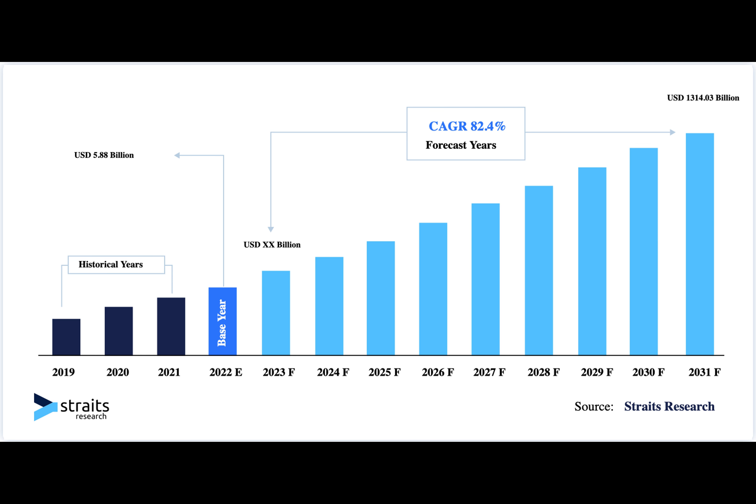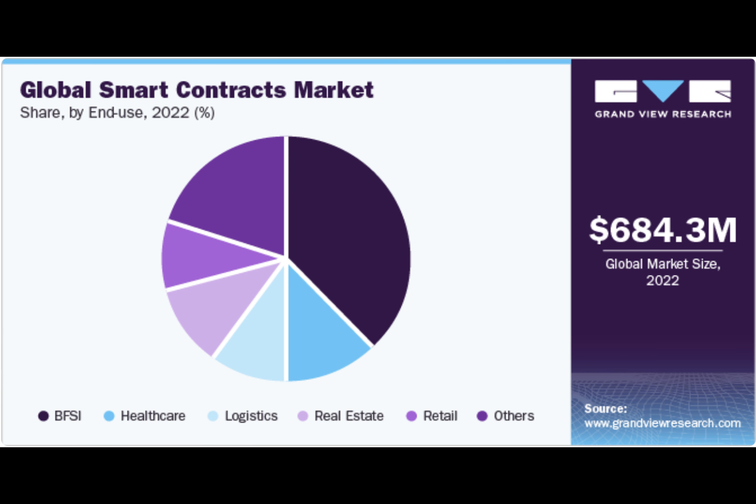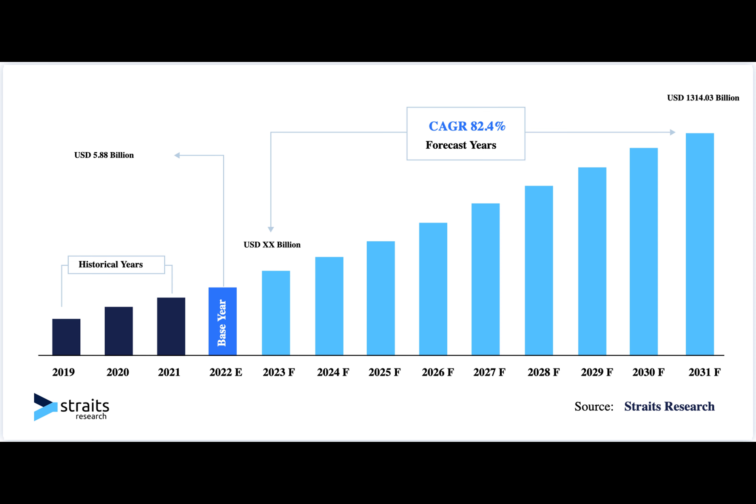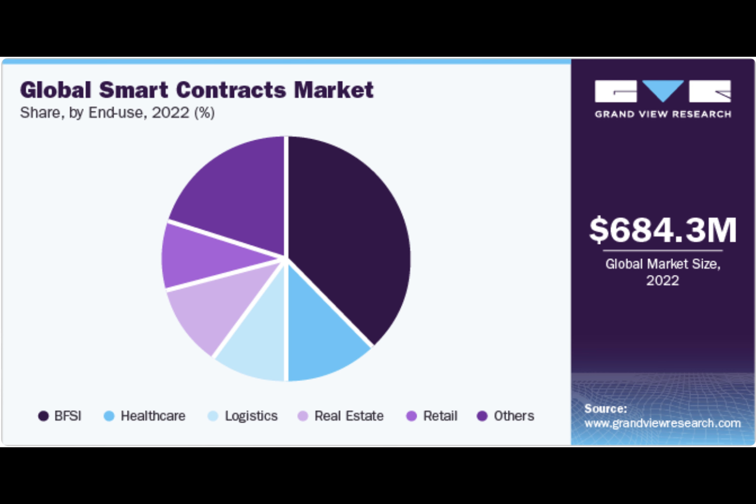As Web3 technologies become more widespread, application-specific blockchains enable developers to customize blockchain characteristics for specific use cases. This customization is particularly beneficial for business applications. For example, Lamata has launched blockchain platforms for real-world assets, addressing long-term challenges in decentralized finance by providing tailored solutions for managing assets like properties and commodities. By developing its own blockchain platform, it improves infrastructure, making assets more accessible for trading while maintaining fluidity and compatibility.